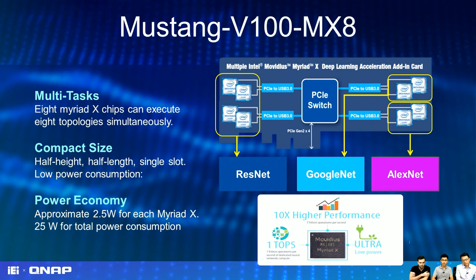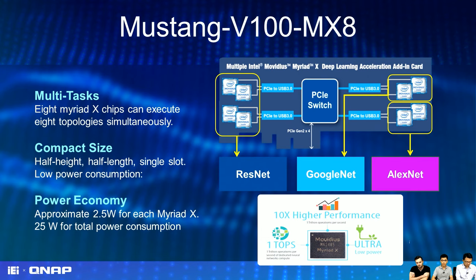With 8 Myriad X cores on board, you can execute different topologies simultaneously. For example, you can deploy 4 channels running ResNet for object detection, 2 channels running GoogLeNet for emotion recognition, and 2 cores running edge identification — all at the same time. Because the cores are independent, you can run different applications concurrently.